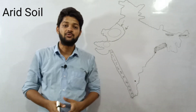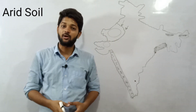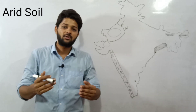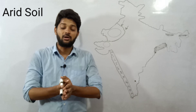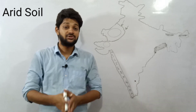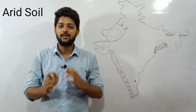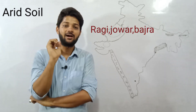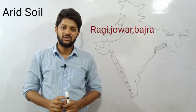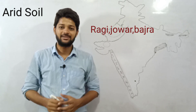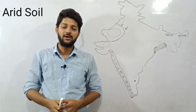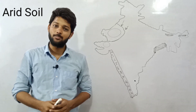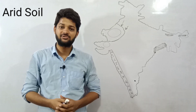In Rajasthan or the western part, coarse grains are produced because other cereals cannot be grown here. Wheat or rice cannot be produced because they need water, and water availability is not much in Rajasthan. So coarse grains — meaning 'mote anaj' — are produced. Examples are ragi, jowar, and bajra. Next, a very important point: due to the dry climate, the process of evaporation is very fast in arid soil.